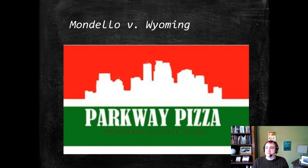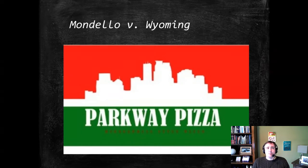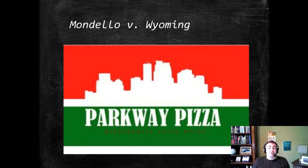Parkway Pizza figures prominently since that's the business Mondello and his wife own. In this case, Mondello wants to purchase a reasonable quantity of cocaine — the court helpfully converts metric to ounces. He could be using it entirely for his own use, with his friend Jones who is also involved, or as an attempt to distribute on a small scale at Parkway Pizza or somewhere else. They seem to suspect distribution at Parkway Pizza.